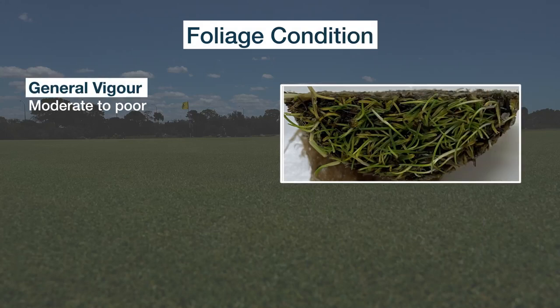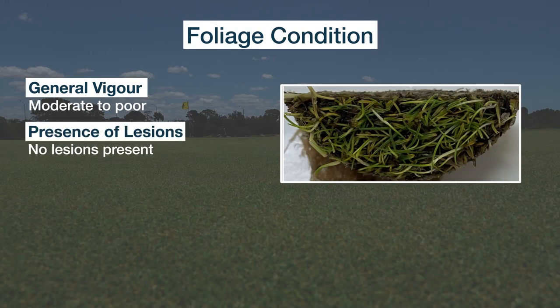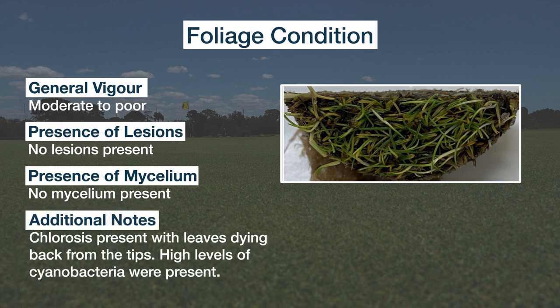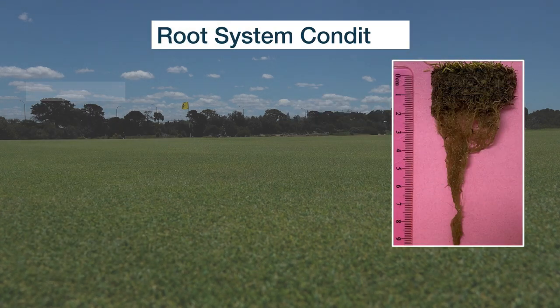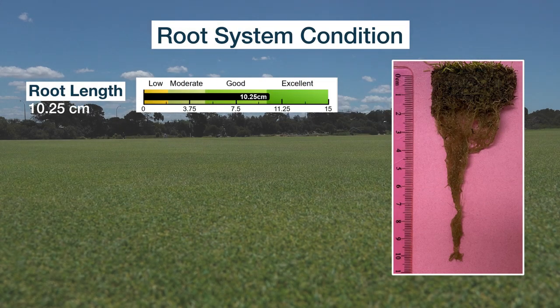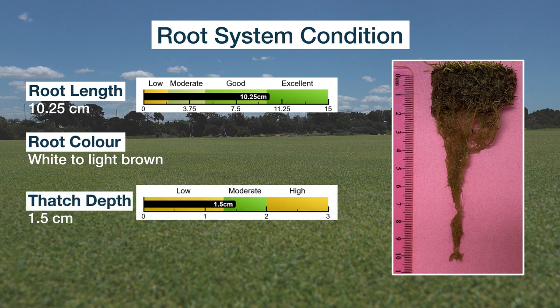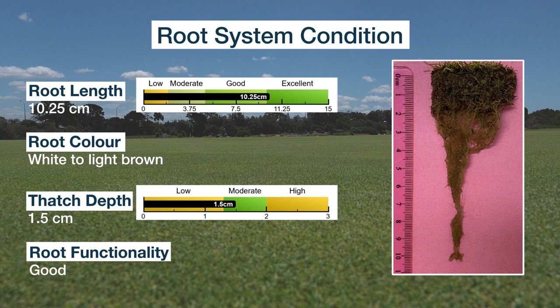When we get the results back from our nematode test, there are a couple of things to look for. First, a good nematode test should also include an analysis of the root system — the health of the roots, the length of the roots, and the function of the roots. We can see here in this report we've got quite a long root system and the root function is good, so roots are performing well under the conditions that the turf grass is growing.